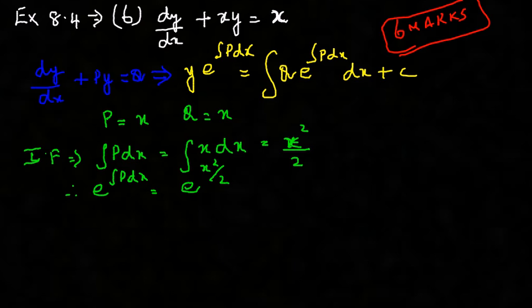Have it as it is here. Now substitute what you have got into this formula. Therefore, y into e power x squared by 2 - do not get too worried by the power and the fractions. Solve it as it comes, the answer will automatically come. Integral q, in place of q we substitute x times e power x squared by 2 dx plus c.